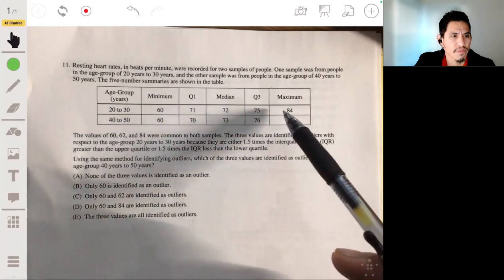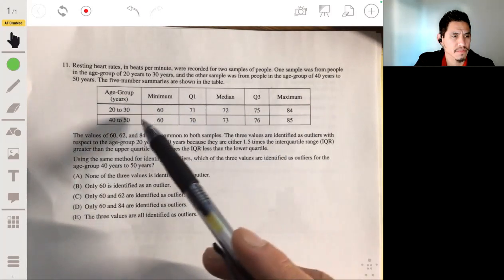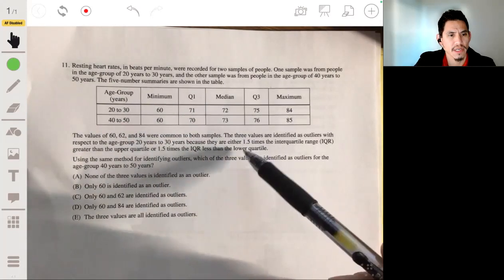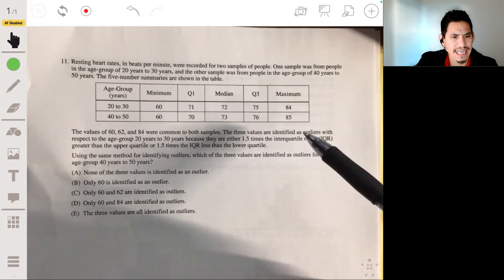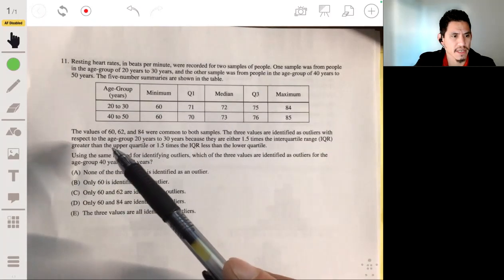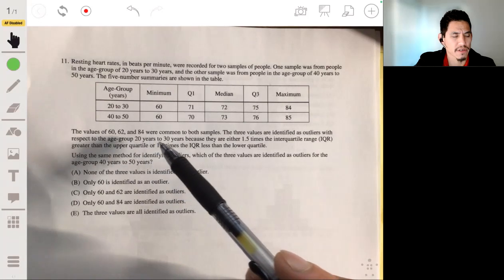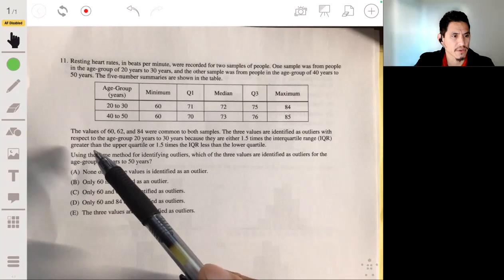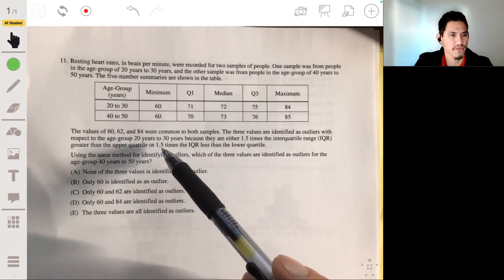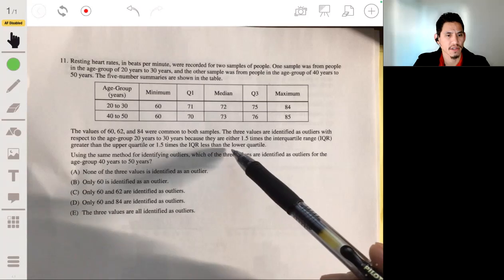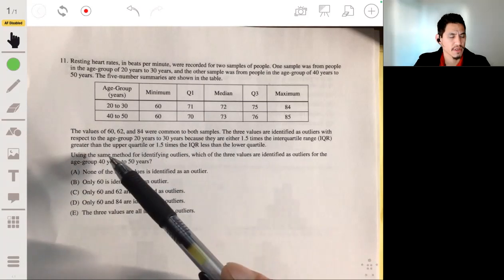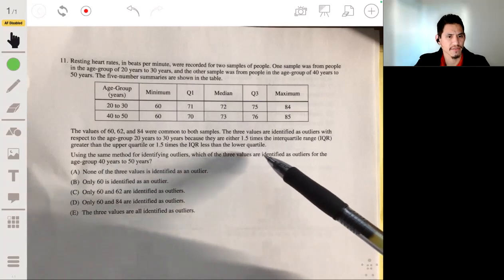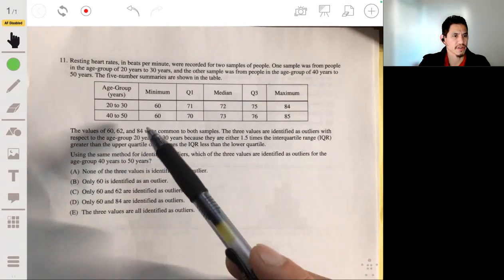Okay, so we got the age groups in the rows and the values of 60, 62, 84 were common to both samples. The three values are identified as outliers with respect to the age group 20 years to 30 years because they're either 1.5 times the IQR range greater than the upper quartile or 1.5 times the IQR range less than the lower quartile. Using the same method for identifying outliers, which of the three values are identified as outliers for the age group 40 to 50 years.